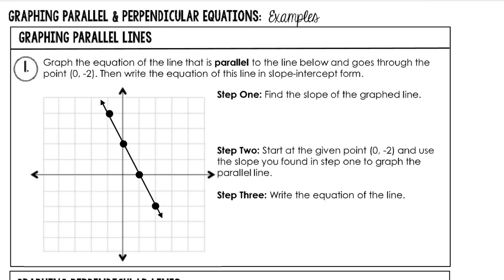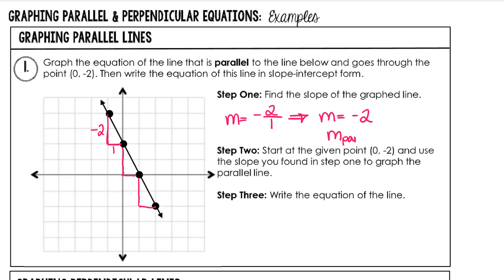Graph the equation of the line that is parallel to the line below and goes through the point (0, negative 2), then write the equation of this line in slope-intercept form. Our first step is to find the slope of the existing line. Slope is the vertical distance over the horizontal distance between two points. Since we're going down and to the right, a downward motion is negative and a rightward motion is positive, giving us negative 2 over positive 1, which reduces to negative 2. The parallel slope would be the same slope, negative 2.